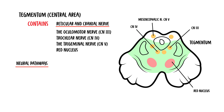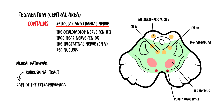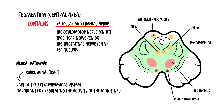The red nucleus receives input from the cerebellum and cerebrum. Important output is via the rubrospinal tract. It is part of the extrapyramidal system and is important for regulating the activity of motor neurons.